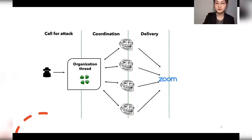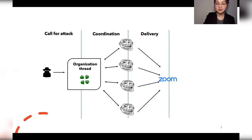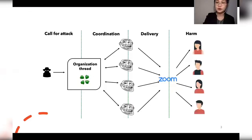Phase three: delivery. The attackers join the online meeting and harass the participants — for example, sending them hateful messages, shouting profanities, or displaying offensive or indecent images through their webcams. Phase four: harm. The goal of the attack is to cause harm to the group of people. Depending on its success and intensity, victims could suffer serious psychological or even physical harm.